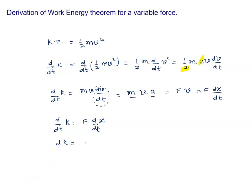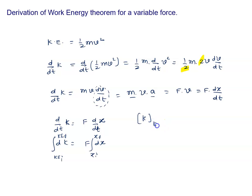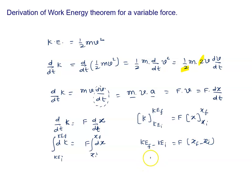From this, we get dK equals F times dx. Now we integrate both sides: from initial kinetic energy to final kinetic energy on the left, and from x-initial to x-final on the right. Integrating gives K-final minus K-initial equals F times (x-final minus x-initial), which is the change in kinetic energy delta K equals F times delta x.